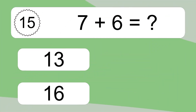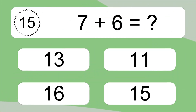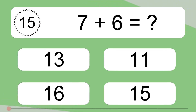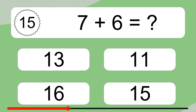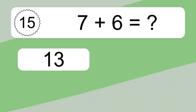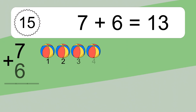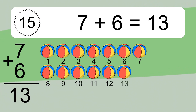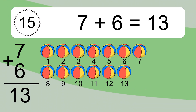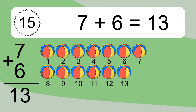7 plus 6 equals what? 7 plus 6 equals 13. Let's count it. 1, 2, 3, 4, 5, 6, 7, 8, 9, 10, 11, 12, 13.